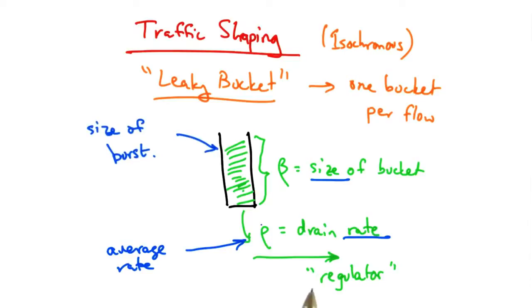The size of the bucket controls the maximum burst size that a sender can send for a particular flow.